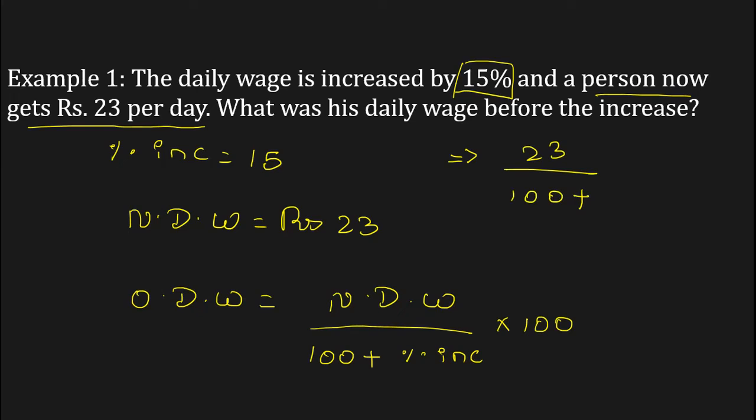Percent increase is 15, into 100. Now solve this: 23 upon 115 into 100.